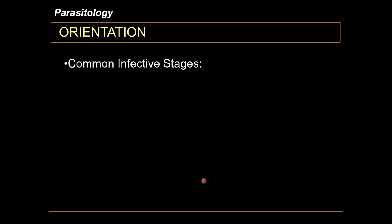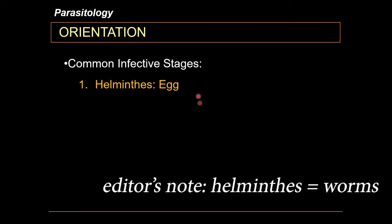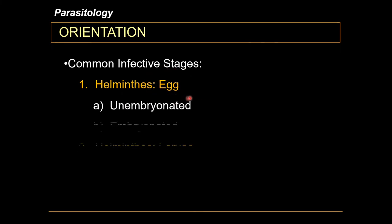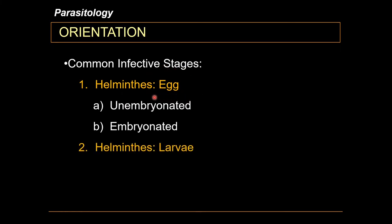As a quick summary, the most common infective stage of worms is the egg or ovum. Some eggs are unembryonated but eventually become embryonated under the right circumstances. As mentioned, it is mostly the embryonated egg or ova that serves as the infective stage of helminths or worms.